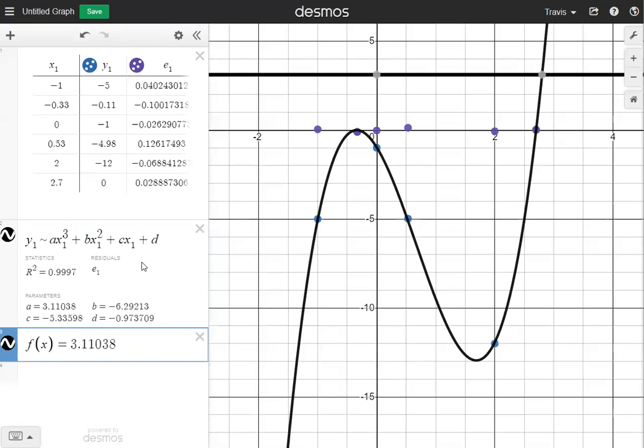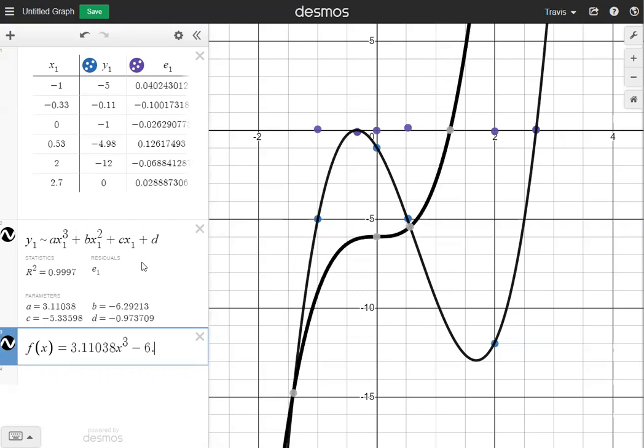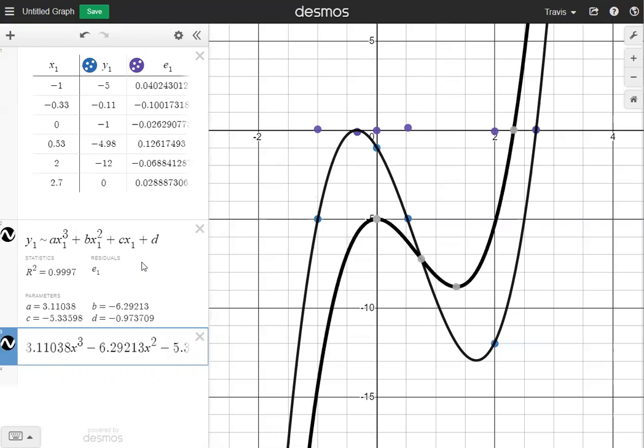So a is going to give me 3.11038. Make sure you use all the decimal points to be precise. And now I need x cubed plus b, which is actually going to be minus 6.29213. And then I'm going to multiply that by x squared minus c, which is 5.33598.